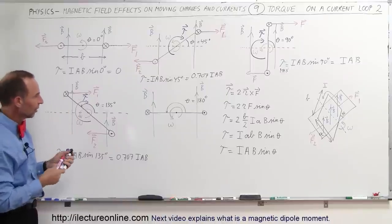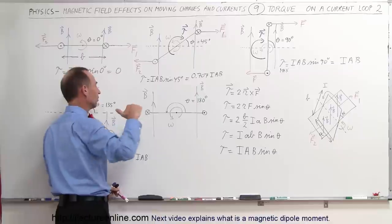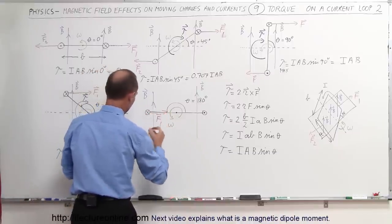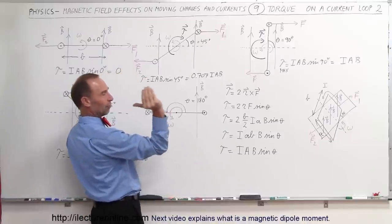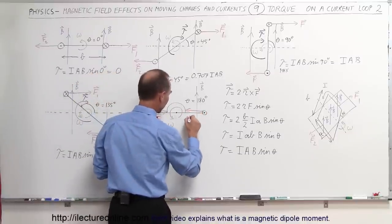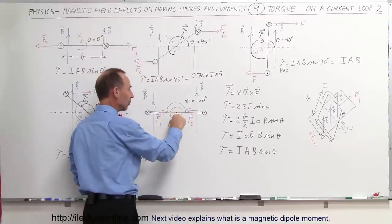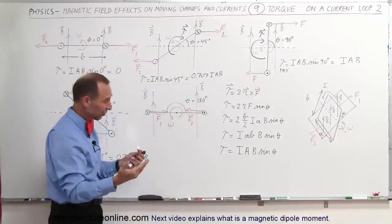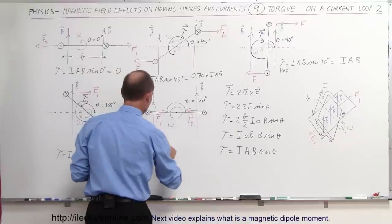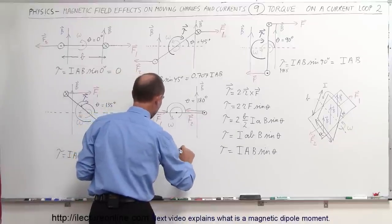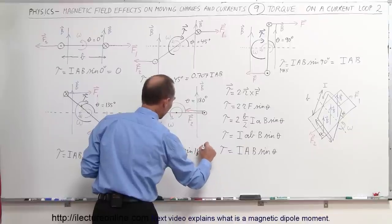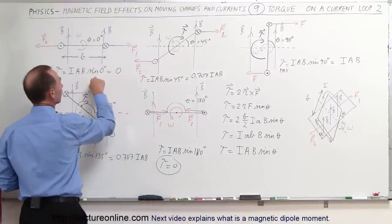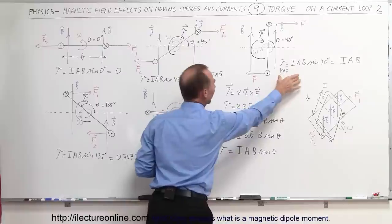Finally, when the loop has turned a full half turn to 180 degrees, the current over here is into the board, B field is up, so force is in this direction — F1. Over here the current is out of the board, B field is up, force in this direction — F2. There is no perpendicular distance from the point of rotation to the line of action of the force, because the line of action goes right through the point of rotation. Therefore zero torque. The torque equals I·A·B times sine of 180 degrees, which equals zero.